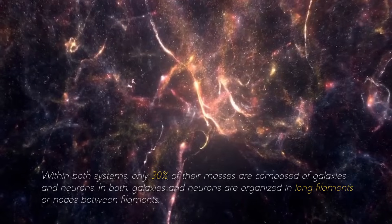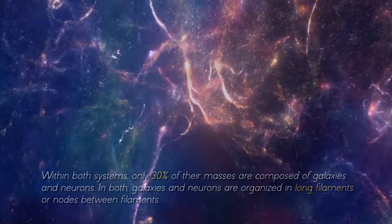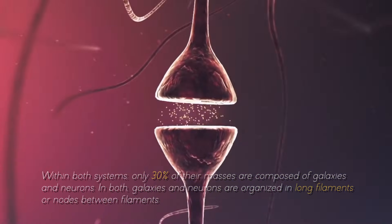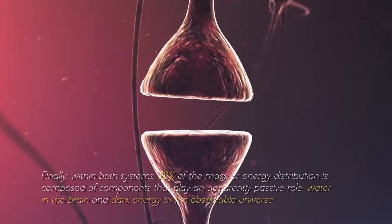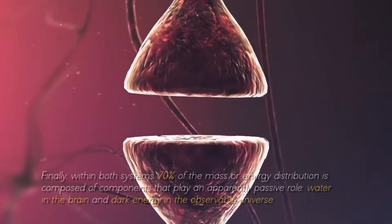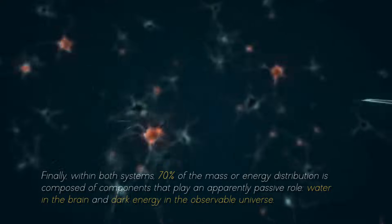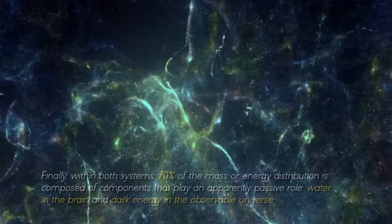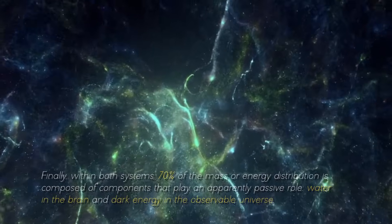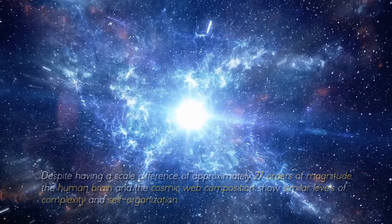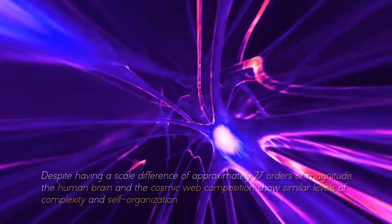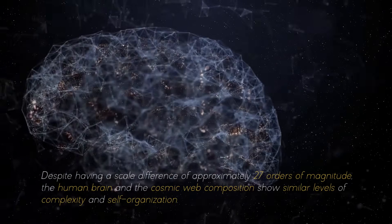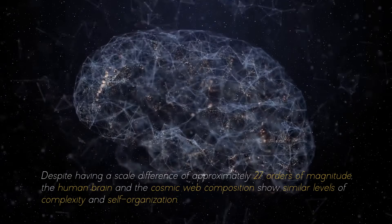Within both systems, only 30% of the masses are composed of galaxies and neurons. In both, galaxies and neurons are organized in long filaments and nodes between filaments. Finally, within both systems, 70% of the mass or energy distribution is composed of components that play an apparently passive role, water in the brain and dark energy in the observable universe. Despite having a scale difference of approximately 7 times orders of magnitude.